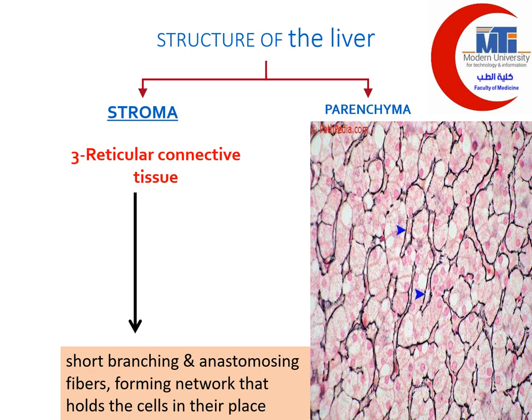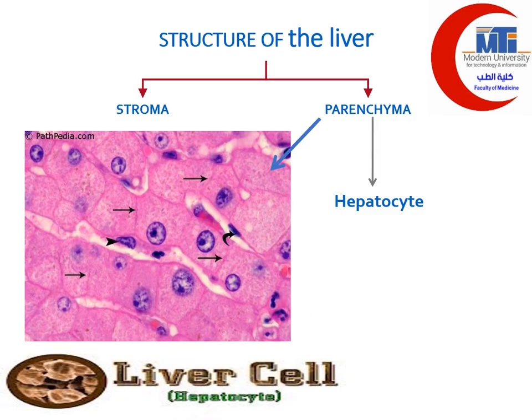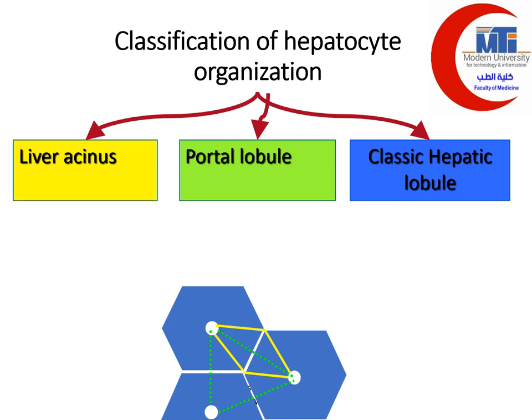The parenchyma of the liver consists of liver cells called hepatocytes. Hepatocytes can be classified according to their organization into three structural models: the classic hepatic lobule, the portal lobule, and the liver acinus.